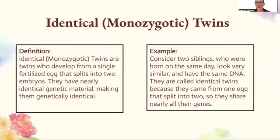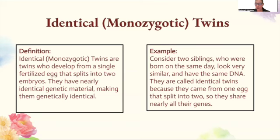Identical monozygotic twins are twins who develop from a single fertilized egg that splits into two embryos. They have nearly identical genetic material, making them genetically identical. Consider two siblings born on the same day who look very similar and have the same DNA — they are called identical twins because they came from one egg that split into two, so they share nearly all the same genes.